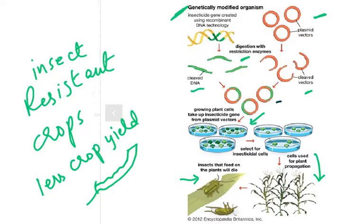We have taken an insecticide gene — a gene that produces a toxin which kills insects — and inserted it into the plant. When the plants grow up, they produce this toxin. Whenever insects come to eat the leaves, they die. So we get insect-resistant crop plants with more crop yield, which means more money for the farmer.